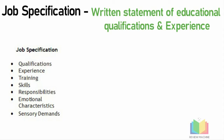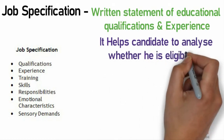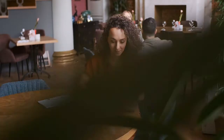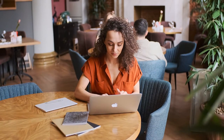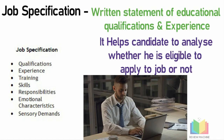Job specification helps the candidate analyze whether they are eligible to apply for a particular job. It helps the HR team understand what level of qualification, qualities and character should be present in a candidate to make them eligible for a job opening. Job specification provides detailed information including responsibilities, desired technical and physical skills, and helps in selecting the most appropriate candidate.